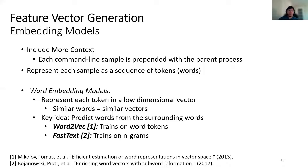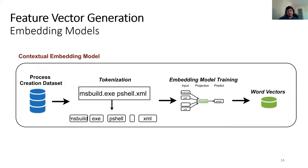Words that occur in similar contexts will be closer in the embedding vector space, and we use word embedding techniques from the NLP community — Word2Vec and FastText — for this task. One of the challenges in training Word2Vec models is that they cannot create representations for new tokens that are not already in the dictionary, and we address this by creating a special rare token used for grouping tokens that appear only a few times in the corpus. FastText trains on n-grams, which means it can generate vectors for previously unseen words if an n-gram is present in the training set. This diagram shows a simple example demonstrating tokenization and embedding model training. We tokenize the command line sample and train an embedding model, and in the end we get word vectors using an unlabeled set of command line samples to be used for feature vector generation.